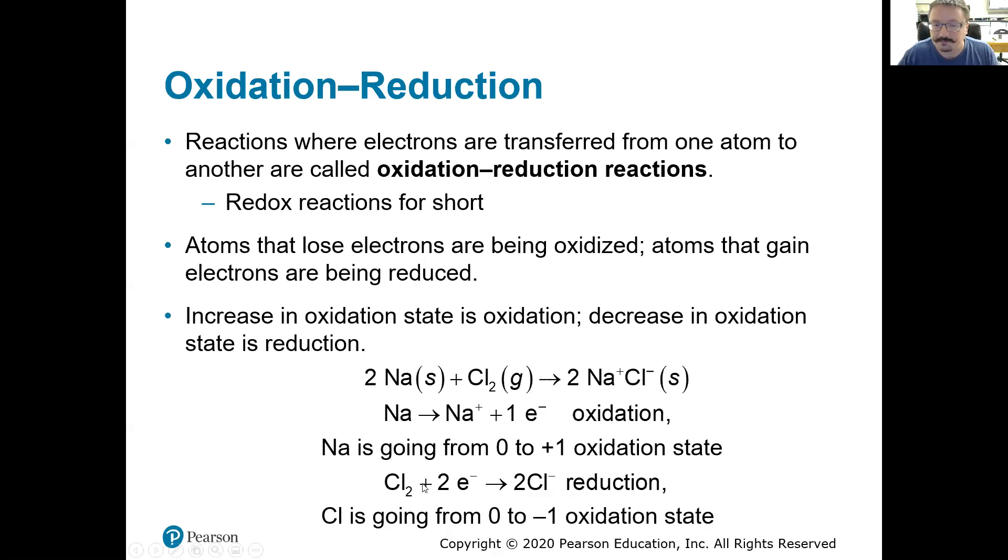Look at the chlorine gas. Cl2, zero. Each one goes from a zero to a minus one. Each one had to gain an electron. We have two chlorines. So the total of two electrons were gained. Gain is reduction. Or oil rig, reduction is gain of electrons. So we have one thing being oxidized, another being reduced.